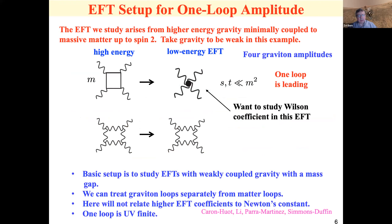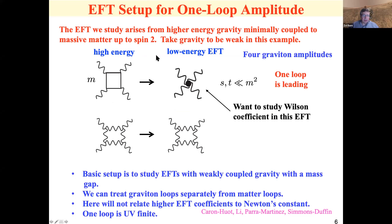The basic setup for the one-loop data: we start with gravity minimally coupled to matter up to spin two. There's a reason we use spin two — if we have spin-two matter going around the loop, we know that's going to be consistent. Then you go to the low energy EFT, collecting a set of contact interactions and Wilson coefficients. For anything involving massless states like gravitons, we just leave that alone — it's just an EFT of low energy particles like the graviton.